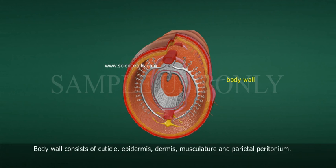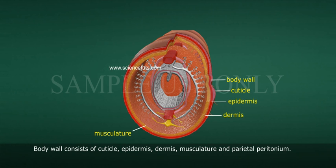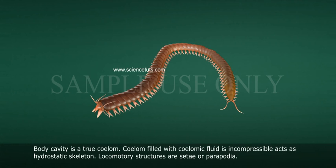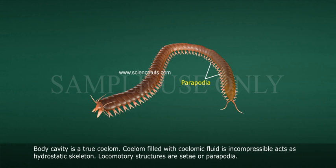The body wall consists of cuticle, epidermis, dermis, musculature, and parietal peritoneum. The body cavity is a true coelom. The coelom is filled with coelomic fluid, which is incompressible and acts as a hydrostatic skeleton.